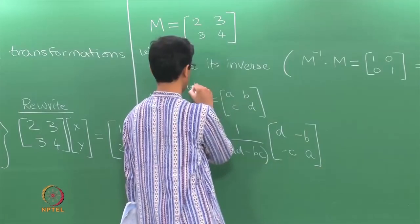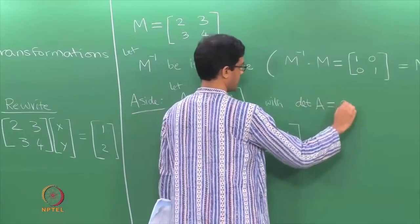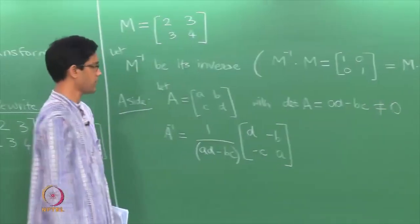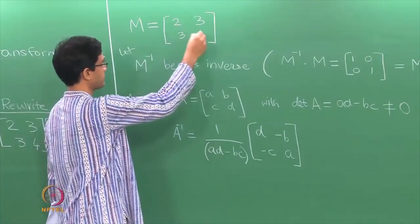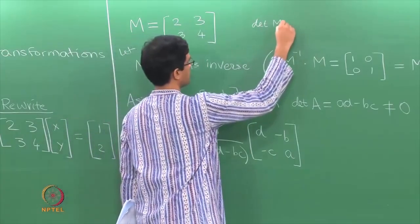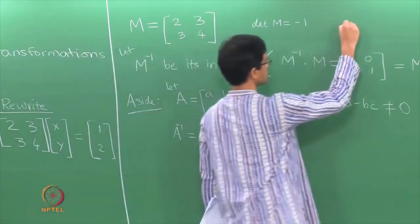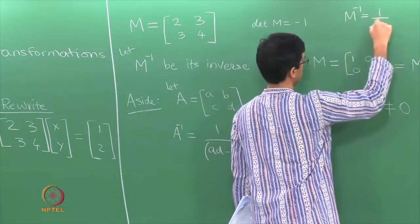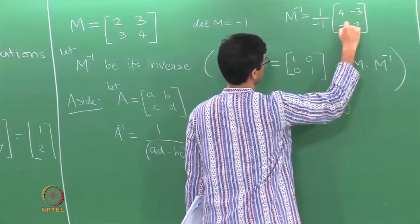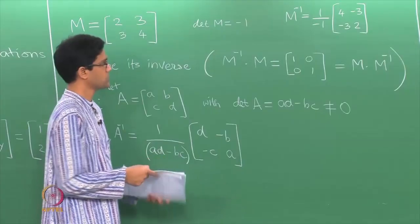Let A be a 2×2 matrix with determinant non-zero — that is, AD minus BC should be non-zero — only then can you find the inverse. In our case the determinant of M is 4×2 minus 9, which equals −1. Applying the formula, the inverse of M is 1 over −1 times the matrix with entries 4, −3, −3, 2. That is the inverse of M.